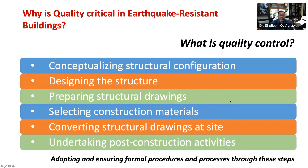Having explained quality and earthquake safety, let's understand what quality control means. Quality control means adopting and ensuring formal procedures and processes based on scientific principles and professionally agreed terms. The need to ensure quality arises at every step of the building development process. The first step is conceptualizing structural configuration — architects and structural engineers need to work together to adopt a good configuration. The second is designing the structure, where structural engineers need to take utmost care performing required calculations as per sound structural safety concepts and relevant design standards. The third is preparing structural drawings, where structural engineers and draftsmen need to comprehensively and accurately present structural design intent in well-detailed drawings.